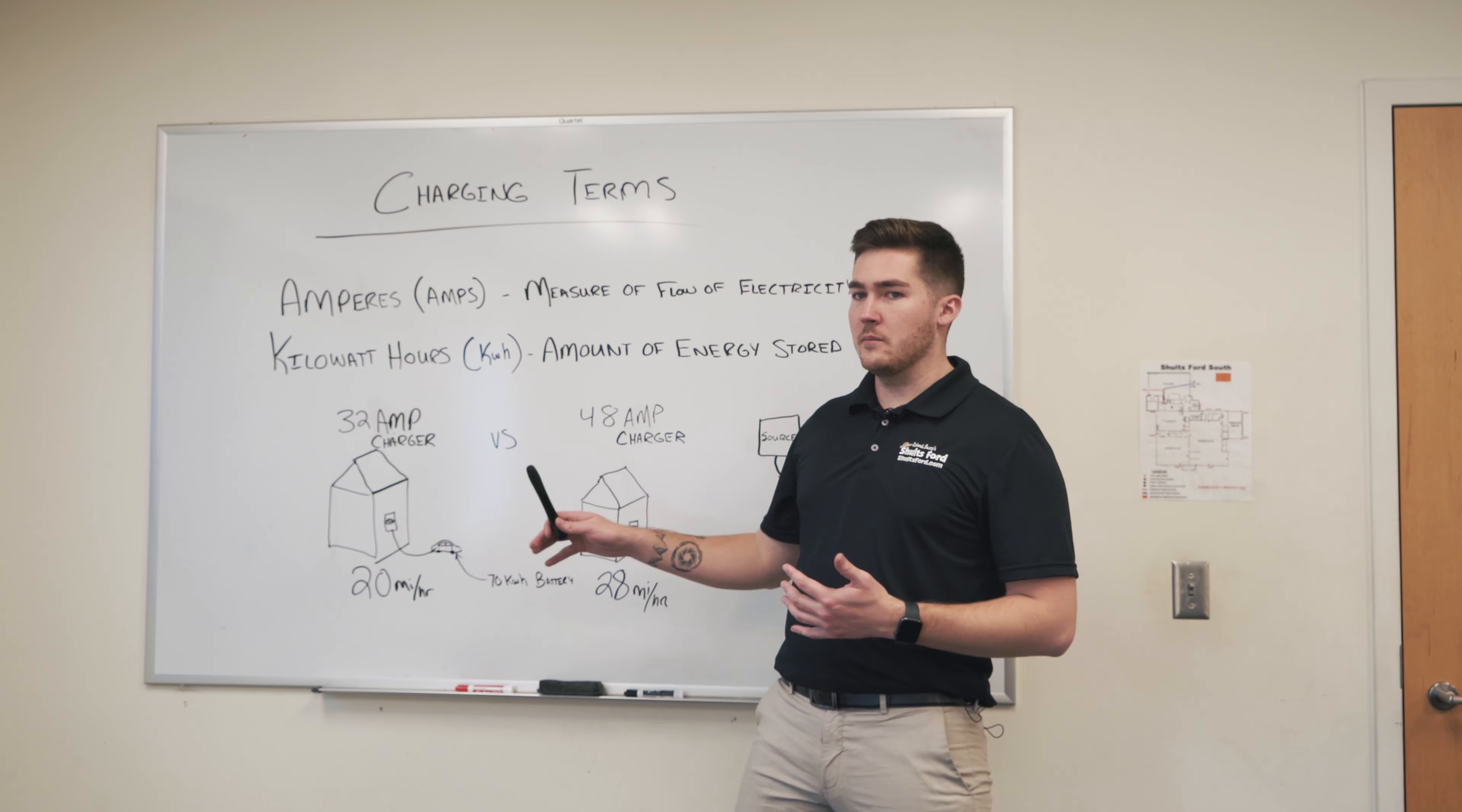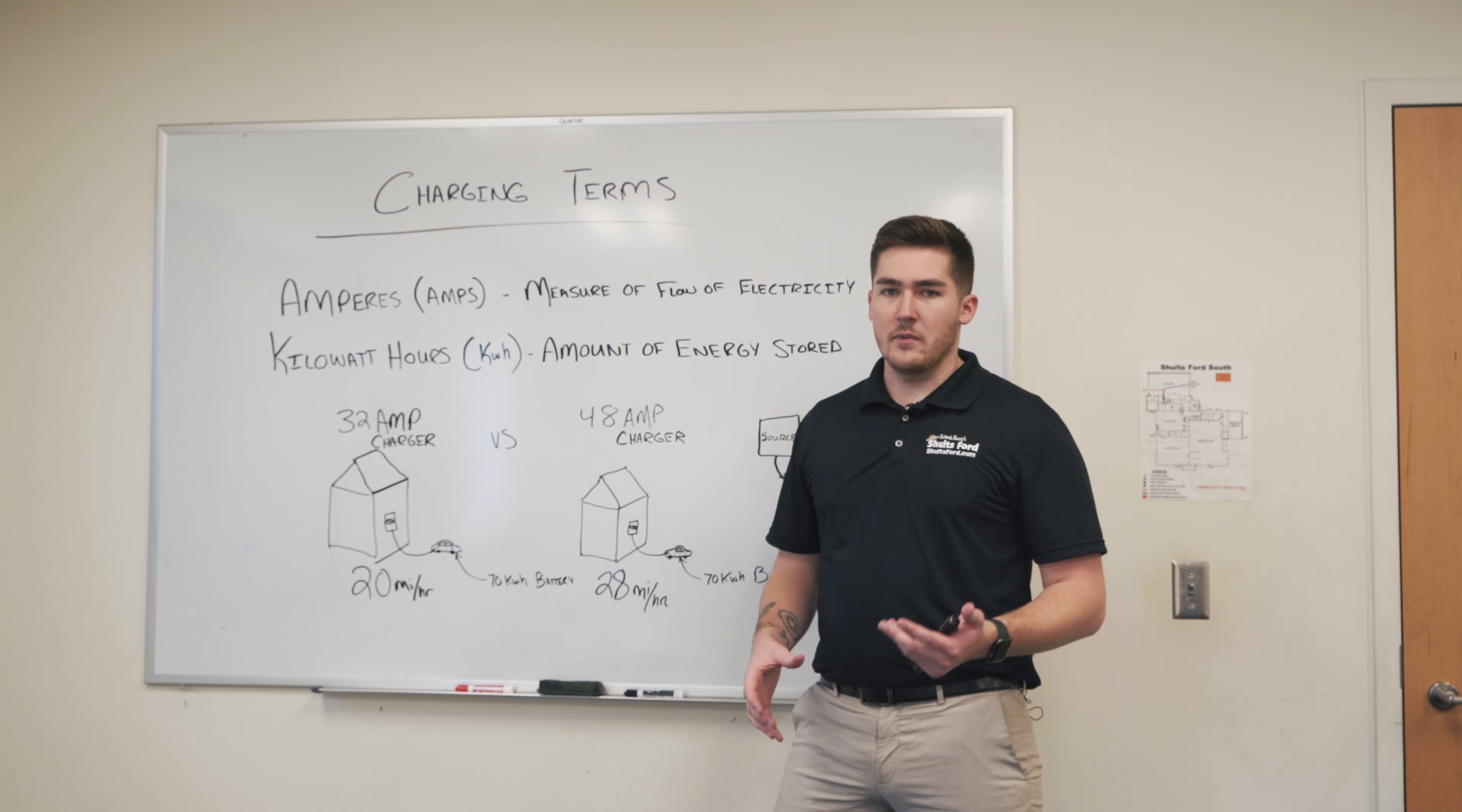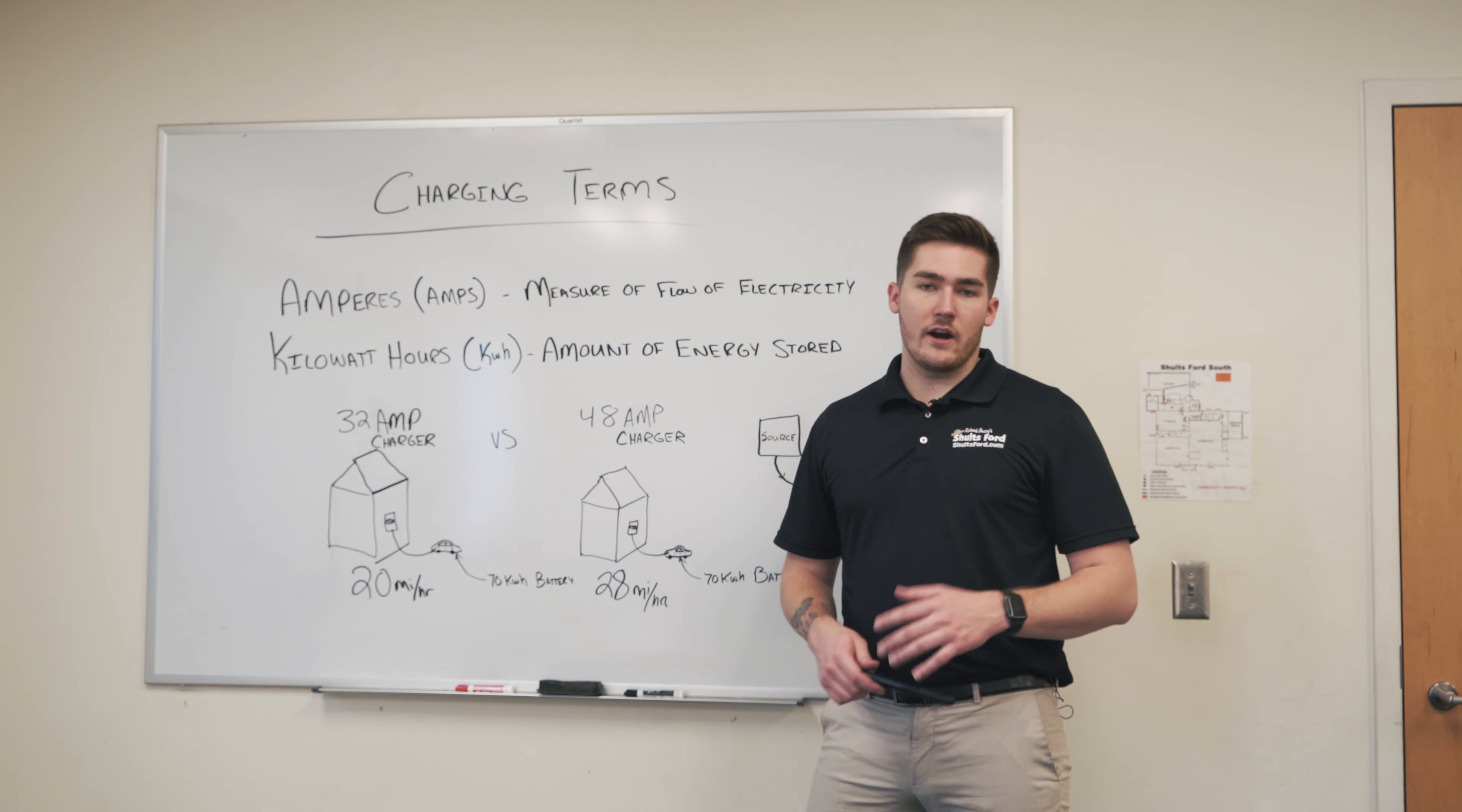But I just want to give you a brief glimpse of a 32 amp charger compared to a 48 amp charger. So a 32 amp charger is going to charge a battery at a rate of about 20 miles for every hour it's plugged in. 48 amp is going to charge a battery about 28 miles for every hour it's plugged in.